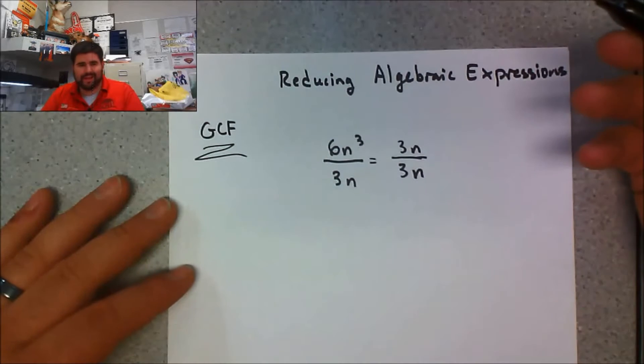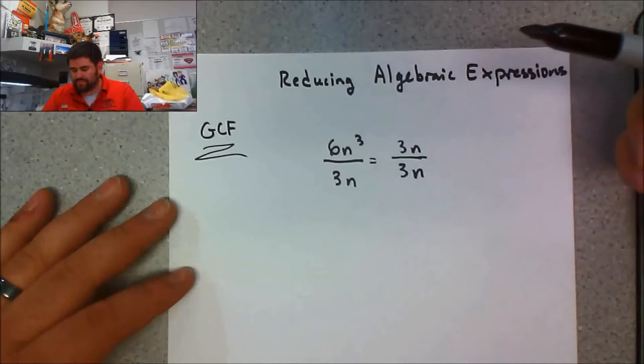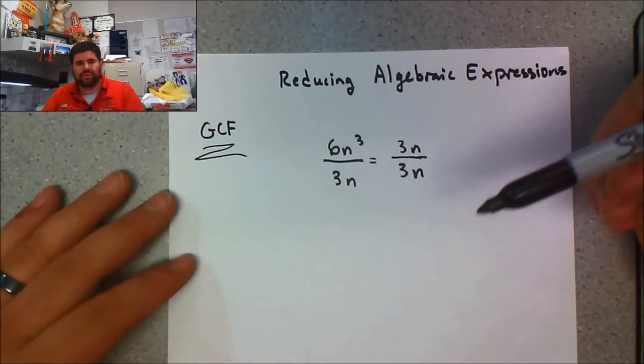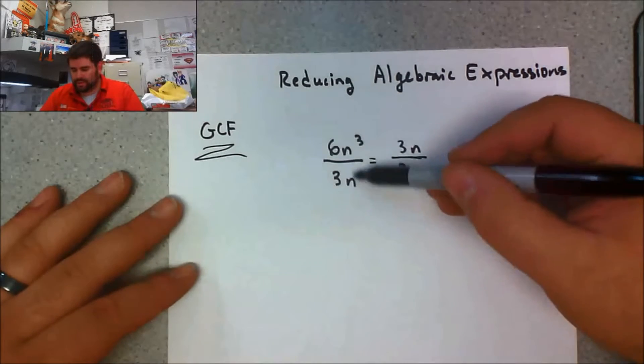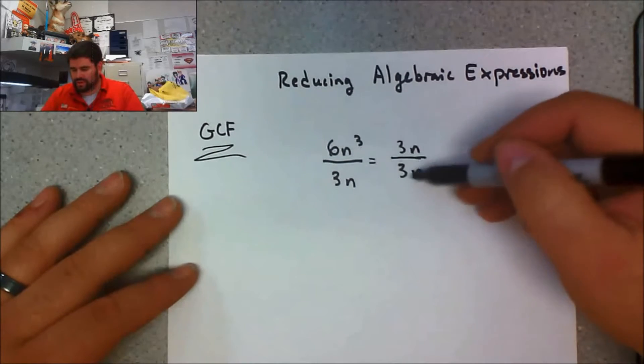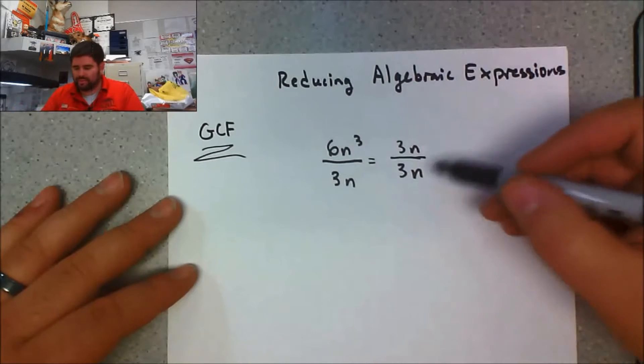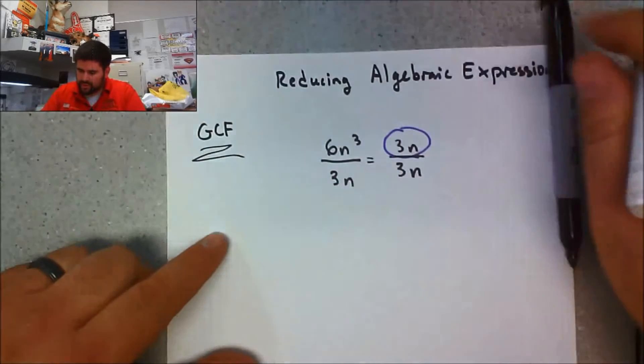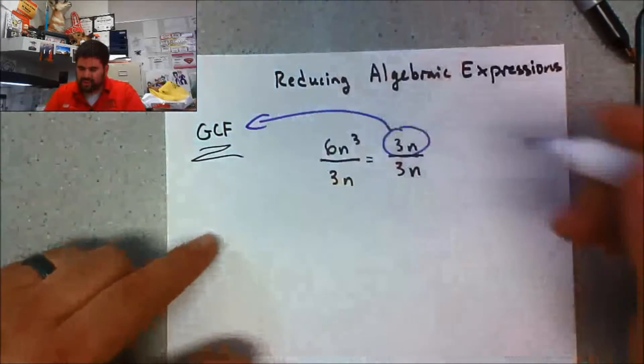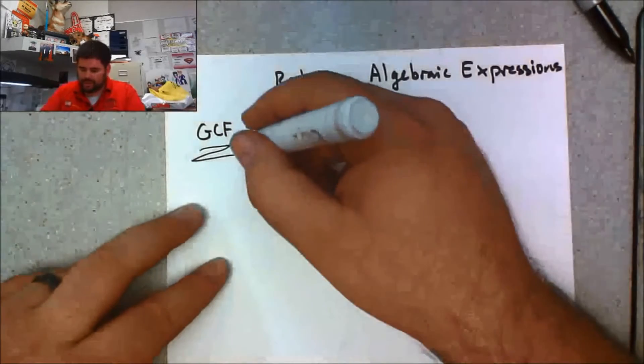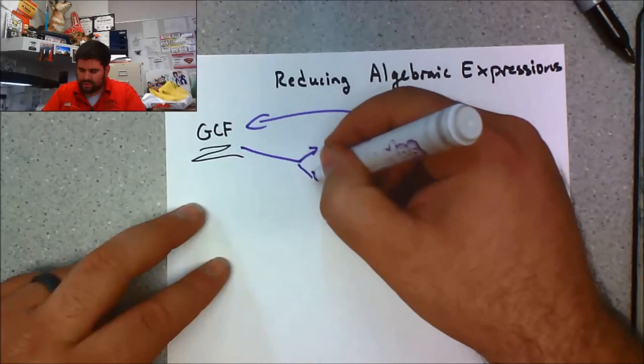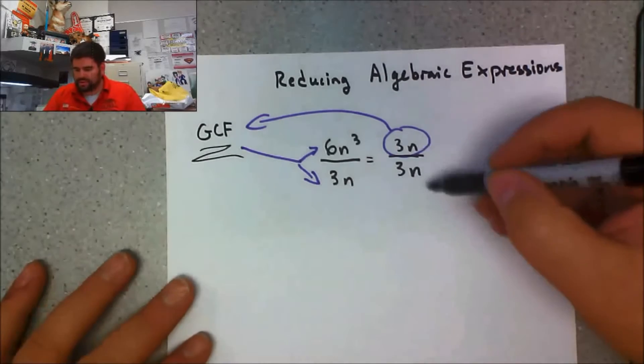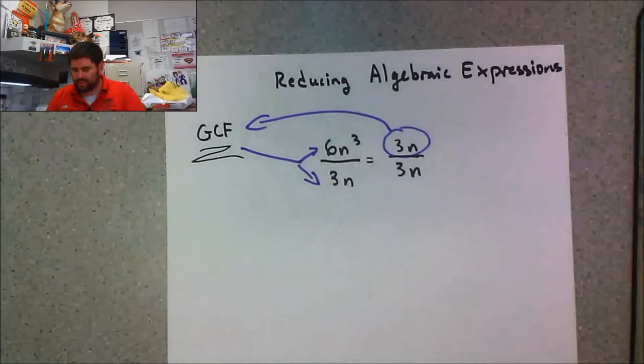The common variable they share is N. Then the question is: how many N's do they share? This N expression has 3 and this one only has 1, so the most N's they share is just 1. So this right here is the expression I can take out—this represents the GCF between these two, and that's really important to remember.